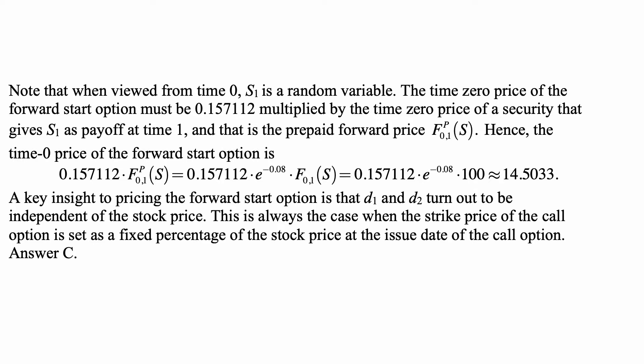But we're not given the prepaid forward price in the problem; we're given the forward price, which is 100. How do the two relate? Well, the prepaid forward price on the non-dividend paying stock is simply the current price in the market. The forward price is equal to the current price in the market accumulated at the risk-free rate. Therefore, the prepaid forward price is equal to the forward price discounted at the risk-free rate, so e to the minus 0.08 times the forward price. The forward price is given as 100, so we plug it in and we get 14.5033, approximately.